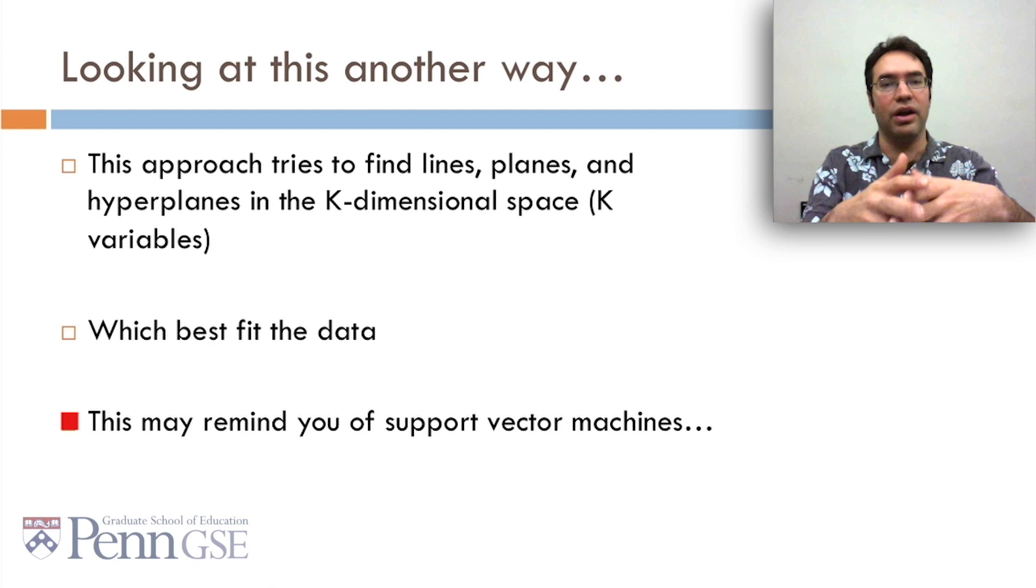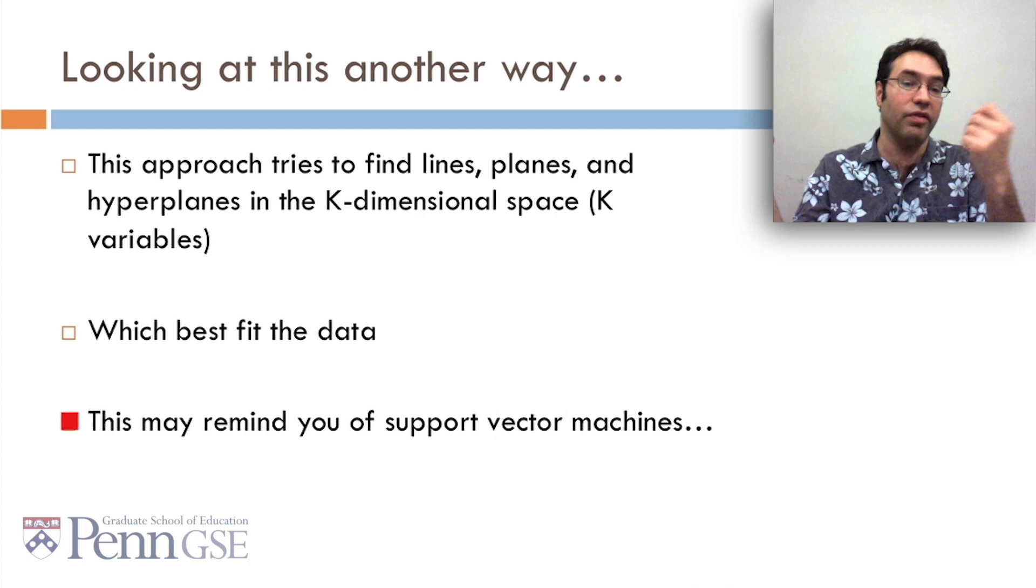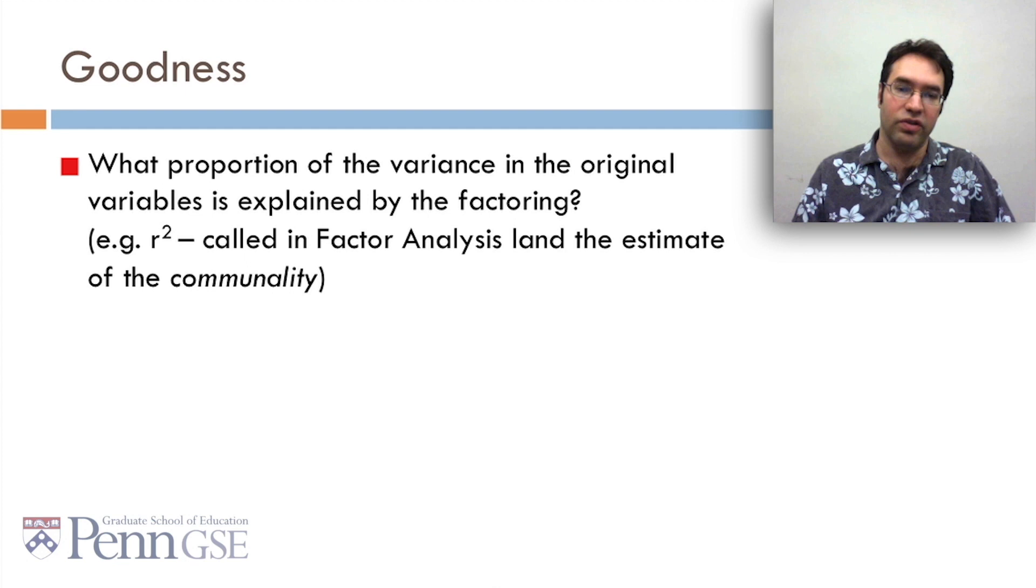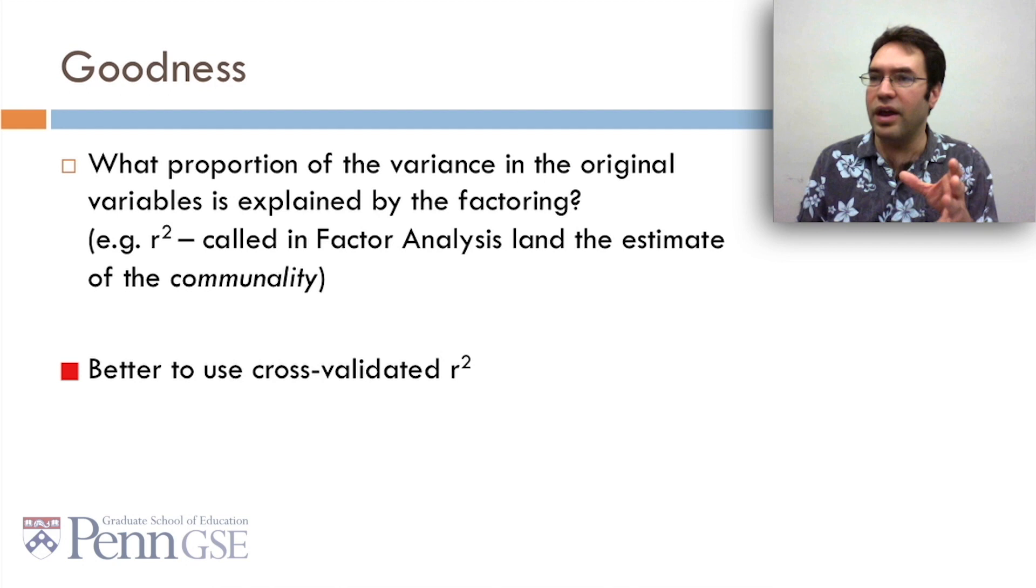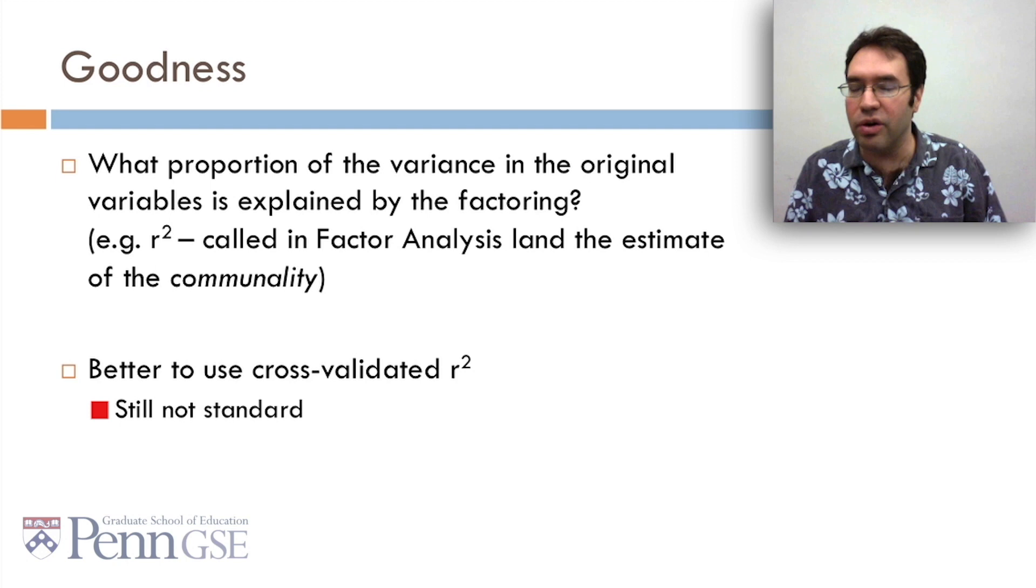So how do you compute the goodness of a factor analysis? Well, you look at what proportion of the variance in the original variables is explained by the factoring. This is typically computed as r-squared or the correlation-squared, which in factor analysis land is often called the estimate of the communality. Once again, same thing, different terms. The only thing I'd add to this is it's usually better to use cross-validated r-squared than just the original r-squared on all the training data being your test data. That's still not standard. People will typically still, for factor analysis, use the test data as the training data. But if you cross-validate, you'll get a better estimate of how good your factors really are.